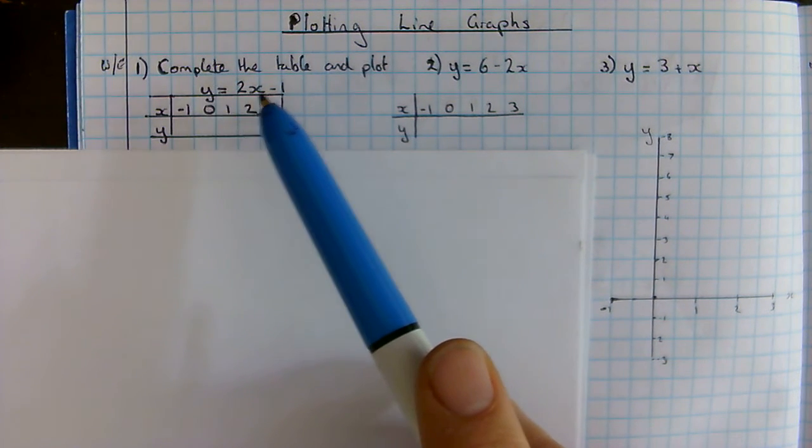Then I've got 3, 5 up here. We should notice if those don't all form on a straight line, we've made a mistake, so it should be easy for us to spot whether or not these are correct. I'm going to connect those up with a straight line using a ruler, and I should always label my line with its equation. The equation of this line is y equals 2x minus 1.